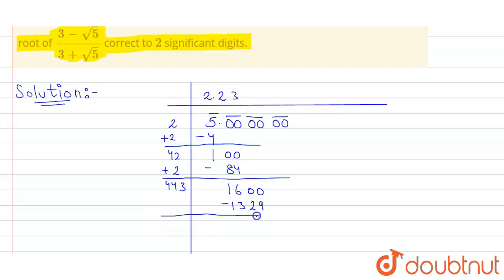Now we will subtract this. We will get 271. Now we will take these two zeros again. And we will add this 443 plus 3 is 446.